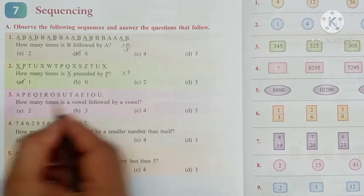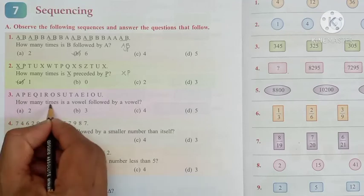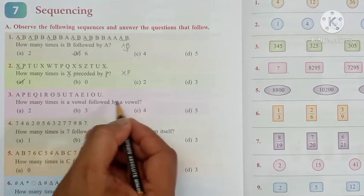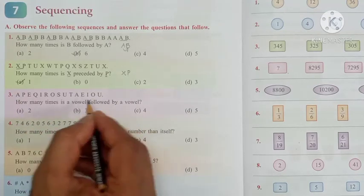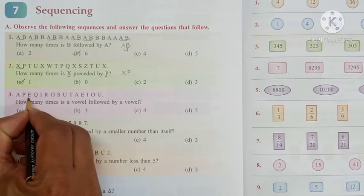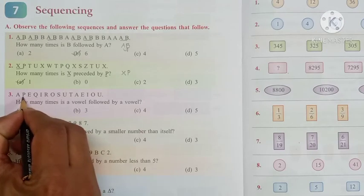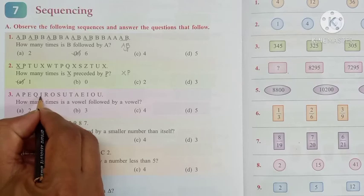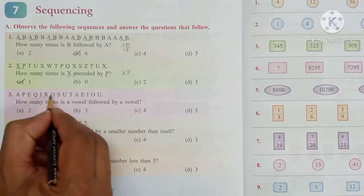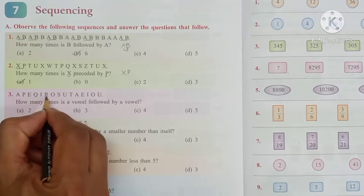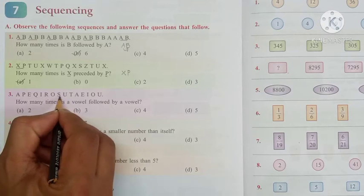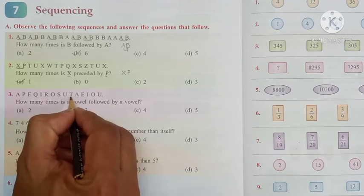Now the third question children. How many times is an oval followed by an oval. Here we have an oval, but it is not followed by an oval. Here we have an oval, it's consonant. Oval, prior to it consonant. Oval, but consonant. Oval, consonant.